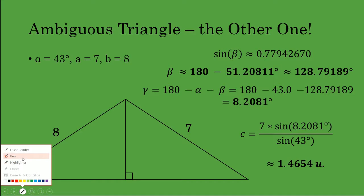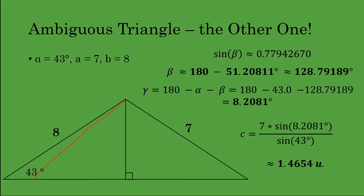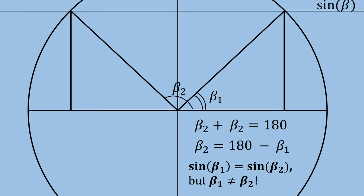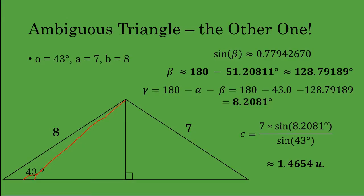The angle opposite side b equal to 8 is now obtuse — about 128.8 degrees rather than just 51. After this step it's fairly simple, because we can just solve that triangle. We know that gamma here is going to be a much smaller angle — only about 8 degrees — and that makes sense because that third angle can only be so large given the triangle sum theorem. And we can solve for c, which is just going to be the smaller value of about 1.465 units, using either the law of sines or the law of cosines. It makes sense that in this obtuse triangle we get a smaller value for c — there's just not as much room for that triangle.